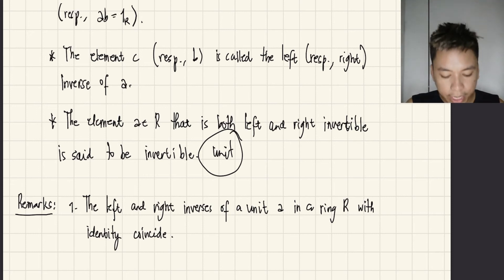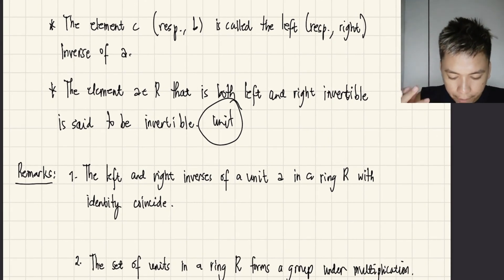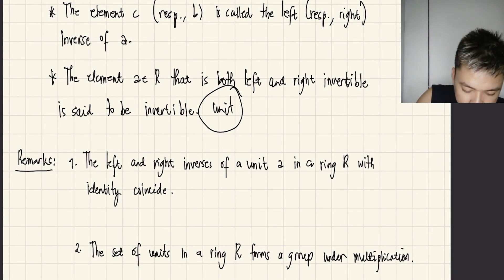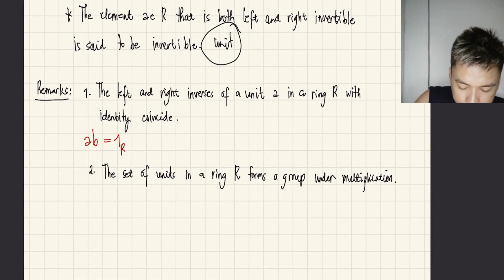By this, we will introduce some remarks about this unit or the invertible element. First remark says that the left and right inverses of a unit A in a ring R with identity coincide. So what does it mean? Remember that if I'm going to write AB equals 1R, this thing here is right invertible. And I'm going to write CA equals 1R, so this one is left invertible.